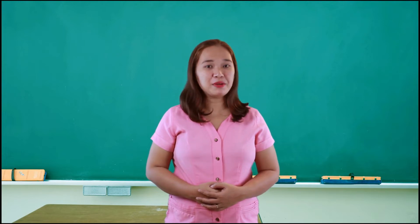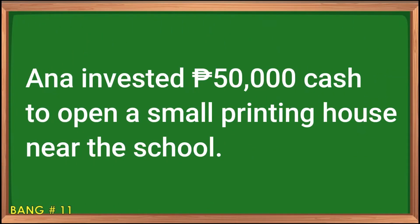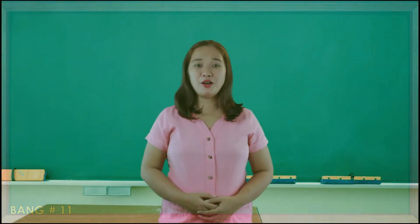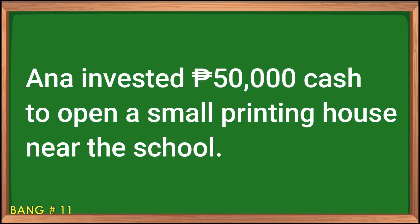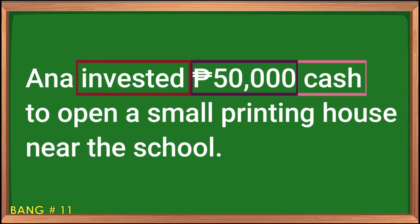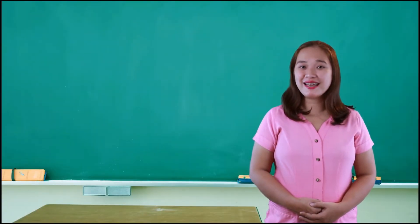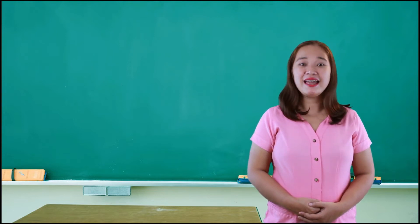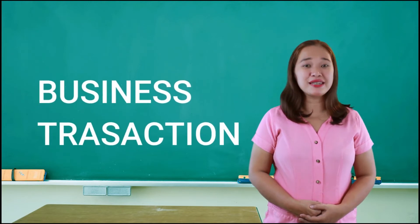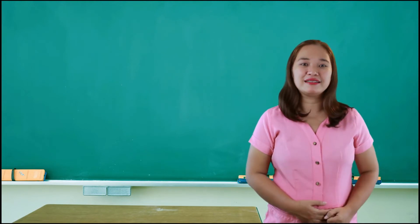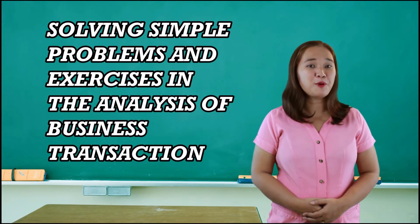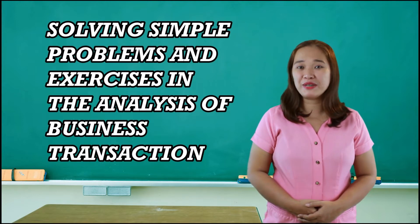Now, try to examine this statement: Anna invested 50,000 pesos cash to open a small printing house near the school. What have you observed? The statement contains the words invested, cash, and an amount of money which is 50,000 pesos. This indicates a business transaction. Our lesson for today is solving simple problems and exercises in the analysis of business transactions.